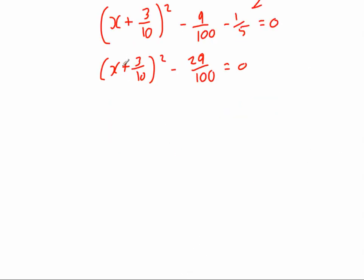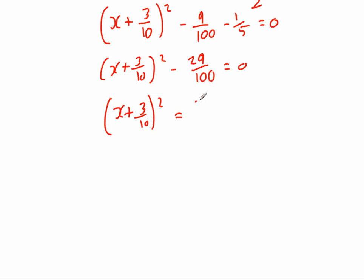Because we want to solve this and find x, we're going to add 29 over 100 to both sides, then square root, and then take away the 3 tenths. So that gives us x plus 3 over 10, squared, equals — adding 29 one hundredths to both sides — 29 over 100.